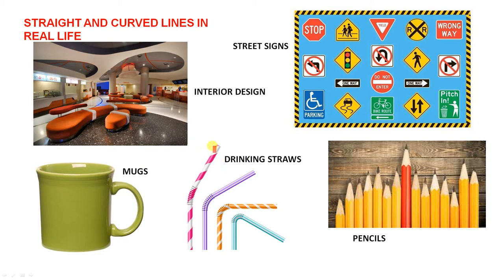The drinking straws — part of it's straight, part of it's curved. And the pencils are a good example of straight lines. And there are some interesting curves here around where the pencil is sharpened.